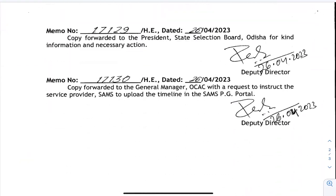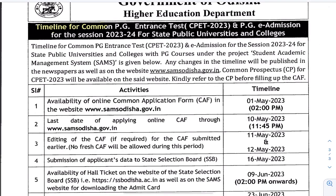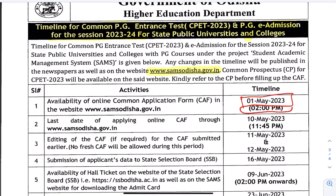Let's look at the timeline for the common PG Entrance Test 2023, for PG admission for the session of fall 2023-2024, for public university, college and public state university. Let's look at the website from the SAMPS website at www.sampsodysa.gov.in. The first application date is 2023.